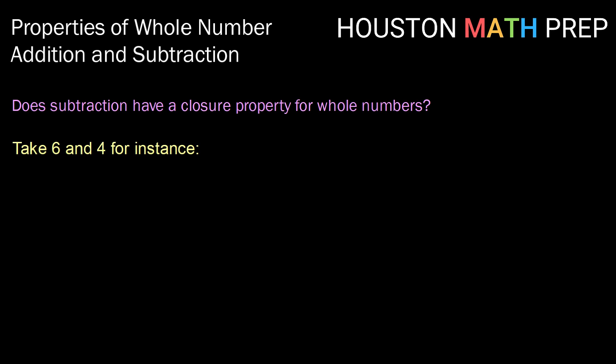Does subtraction have the closure property for whole numbers? Well, take any two random whole numbers. Let's take 6 and 4, for instance. If we can do this subtraction both directions, then we might think closure is there. So let's check it out. 6 minus 4 equals c. By our definition of subtraction, that must mean that there is a value such that c plus 4 equals 6. Well, of course there is, right? 2 plus 4 equals 6.